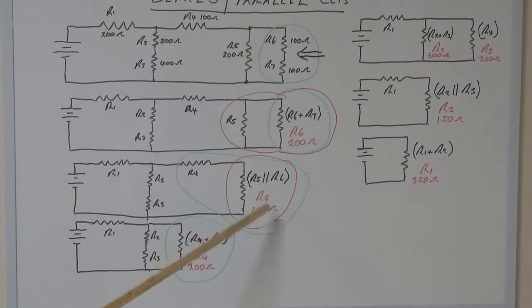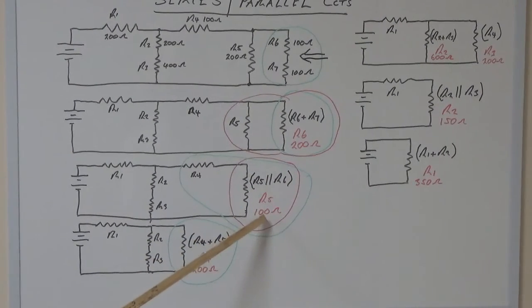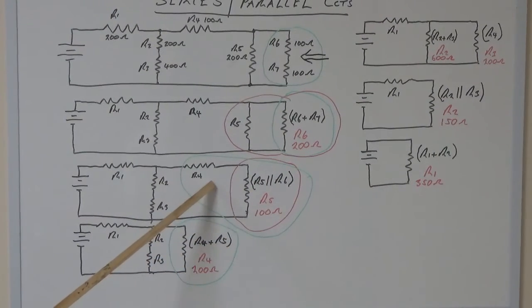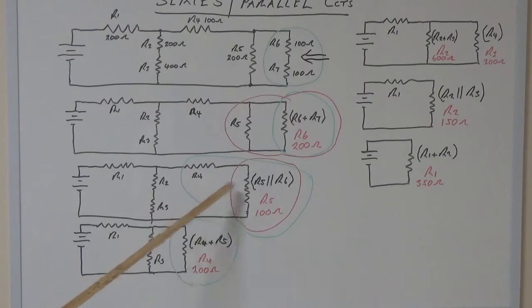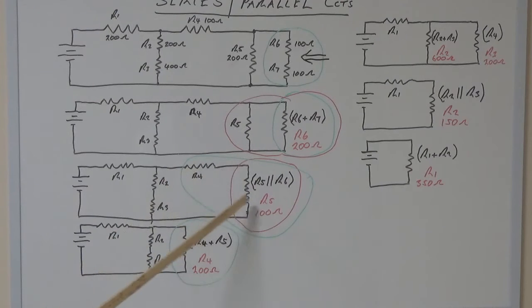So we've gone from here to here. We've got that final result of 100 ohms, and we've got R4, which is also 100 ohms. Looking at this green circle here, we're combining these two resistors and they're in series with each other, so we can combine that. It's just R4 plus the new R5, and if you add those together, 100 plus 100 gives you 200 ohms.